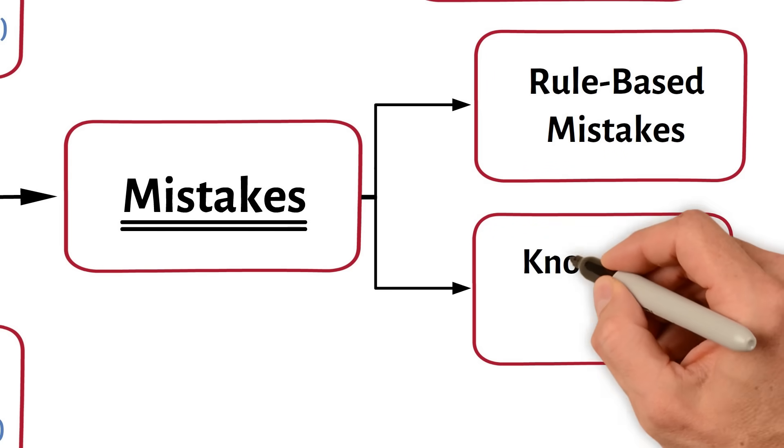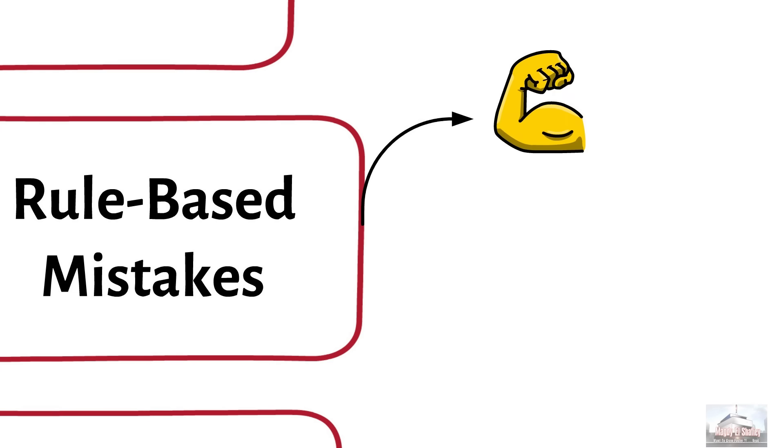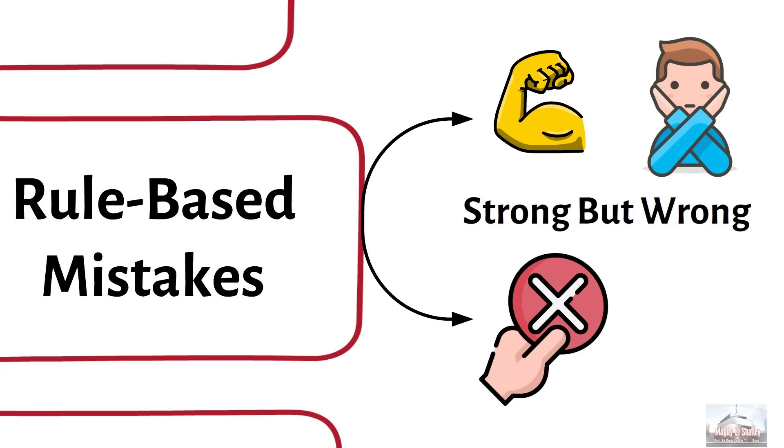Rule-based mistakes and knowledge-based mistakes. The rule-based mistakes occur when a good rule is applied to a situation, but this rule is not appropriate and is not applicable to the present situation, strong but wrong. Or when a bad rule is applied to a situation due to misunderstanding of the task or system.